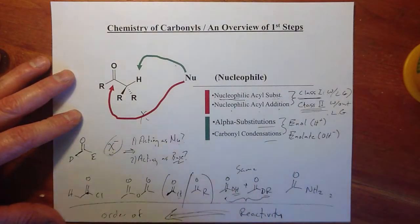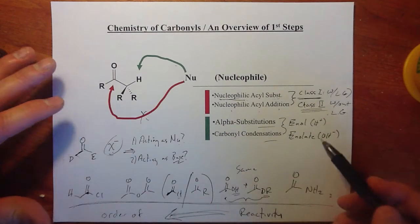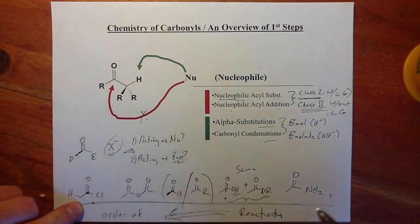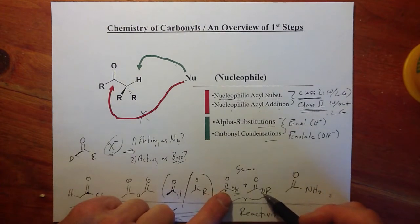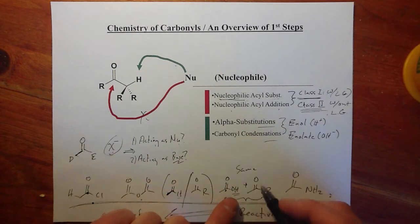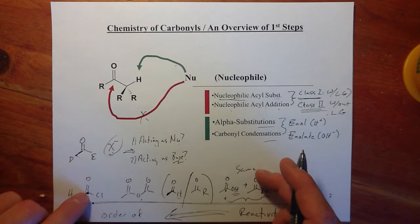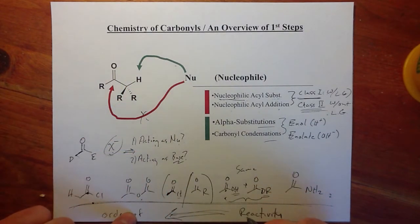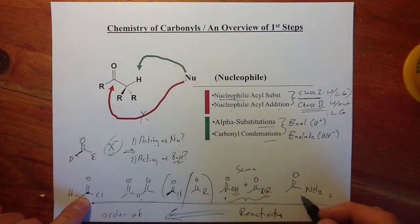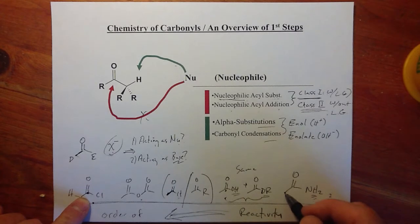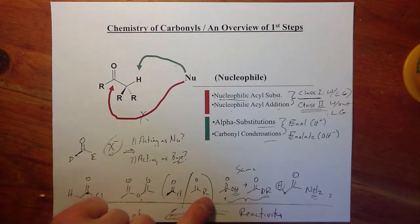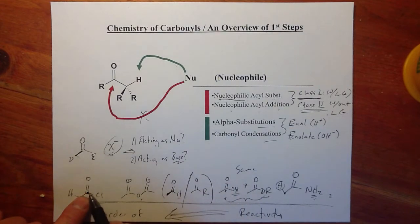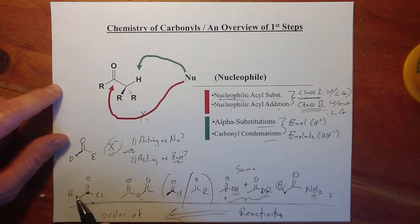I want to point out that we looked at the order of reactivity of different class one and class two carbonyls. Acyl halides were most reactive and amides were on the other end. We had, in this order: anhydrides, aldehydes, ketones, esters, and carboxylic acids about equal. It doesn't matter whether the nucleophile is attacking the carbon or the proton — this order of reactivity remains the same. These are more acidic alpha protons on acyl halides than on amides. The more partially positive the carbonyl carbon is, the more reactive it is to be attacked, and also the more acidic is the alpha proton.